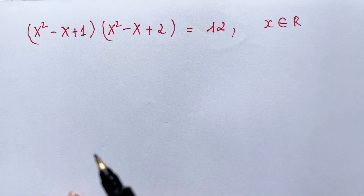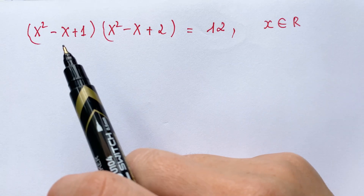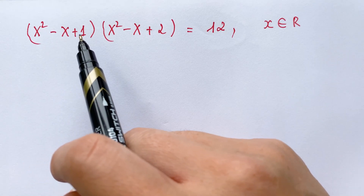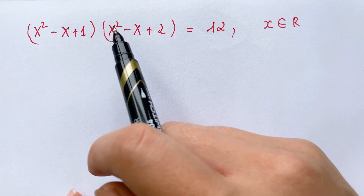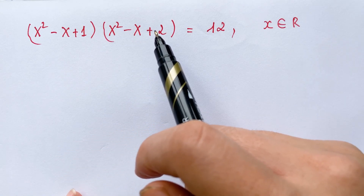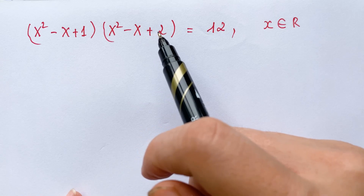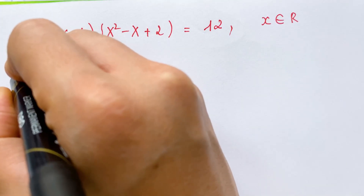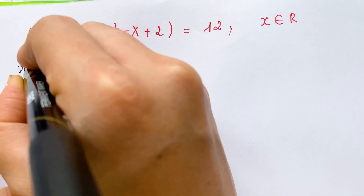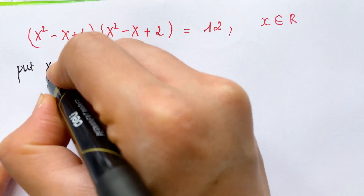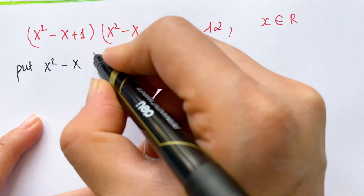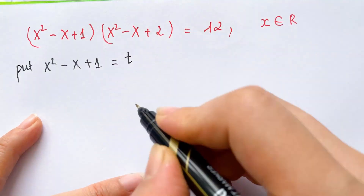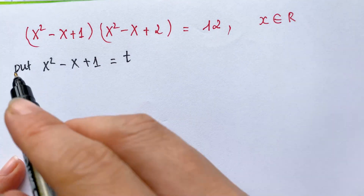Hello, how to solve the expression. Everyone look at that. Firstly, if you can see x squared minus x plus one, you can also break it down as x squared minus x plus one. We can let x squared minus x plus one equal t, and then rewrite the equation.